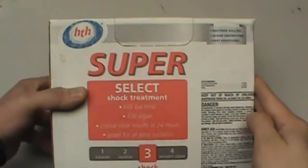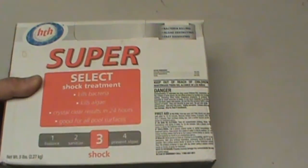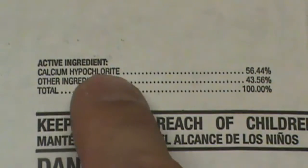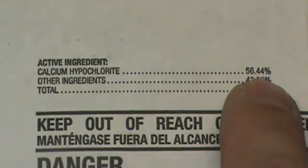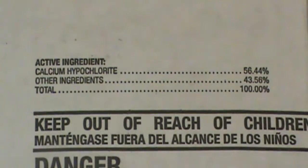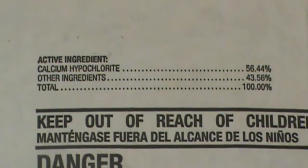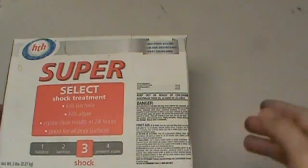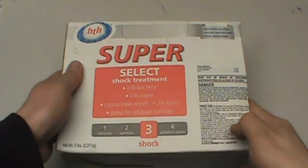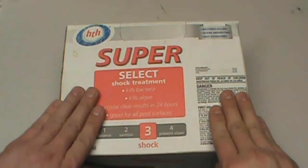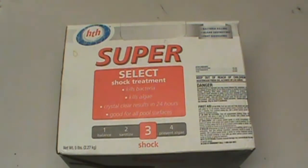When you examine the packaging that the pool shock comes in, you will find a listing of the active ingredients and you can see where it specifies calcium hypochlorite and you will take note of the percentage available to us: 56.44%. If you recall from the instructions from the EPA, they dictated that we must have 70% calcium hypochlorite available to us. Despite the difference, 56.44% versus 70%, we can still utilize this pool shock to suit our needs to disinfect our water, and that is only if we understand the math behind the process.